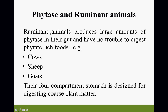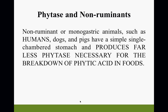Ruminant animals produce a large amount of phytase in their gut and have no trouble digesting phytate-rich foods — cows, goat, sheep, deer, buffalo, bison. Those four-stomach species have no problem because of the phytase they produce. Non-ruminant or monogastric animals — such as humans, dogs, and pigs — have a single-chamber stomach and produce far less phytase, the enzyme necessary for breaking down phytic acid in food.